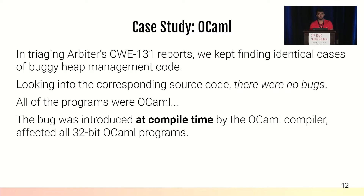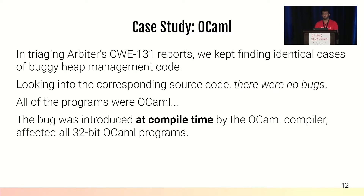In our evaluation we used applications with source code available, so a question arises as to why we performed analysis on binary code. When going through Arbiter's CWE-131 reports, we kept finding identical patterns of buggy heap management code across 25 different packages. When we examined the source code, we could not find the same pattern — in fact there was no C code; it was all written in OCaml. We found that the bug was introduced at compile time by the OCaml compiler and affected all 32-bit OCaml programs. We reported this vulnerability, and it is not triggerable right now.